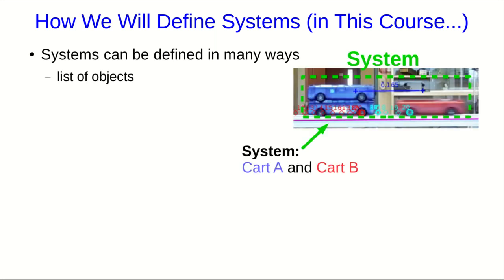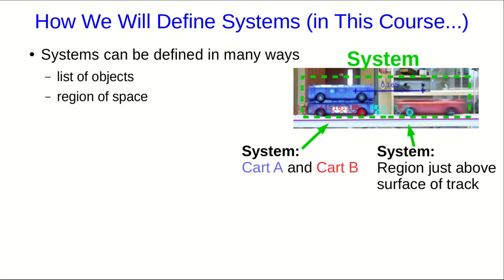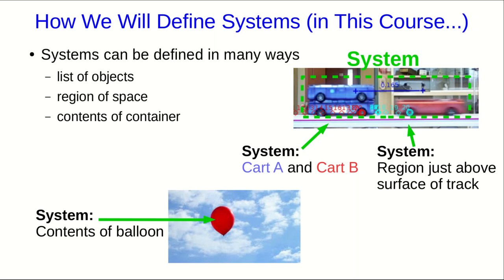You could define a system to simply be a list of objects. For example, in a cart collision you might define it as the two carts. But you might also define a system to be a region of space. Analyzing a cart collision, you might decide to define your system as the region just above the surface of the track, which would normally contain the carts. You can define a system as the contents of a container, even a container that moves around and changes size like a balloon. And there are many other ways to define a system as well.